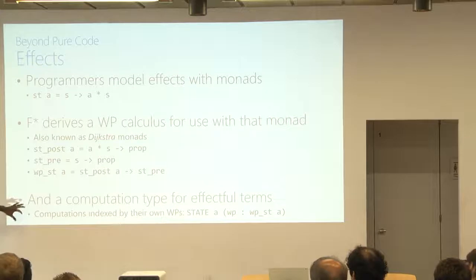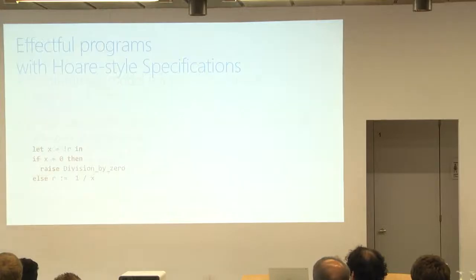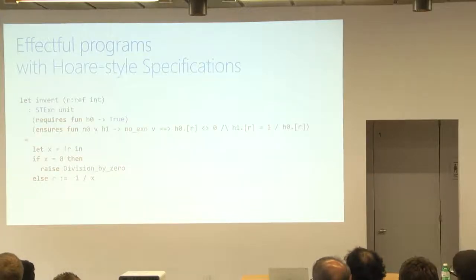And having derived this weakest precondition semantics, F-star provides a way where you can package up this weakest precondition semantics into what we think of as an effect. So then you can just write idiomatic, effectful ML code and prove properties about it. So here's, for instance, an ML program that's using state and exceptions. It's dereferencing a reference, checking if it's zero, and if it's not, it's inverting it and updating the reference.